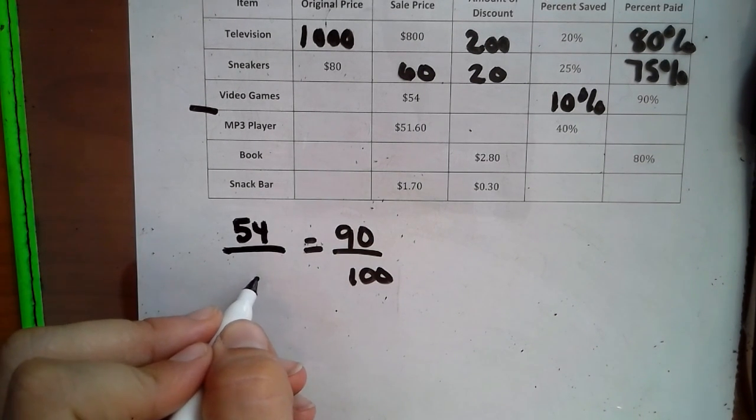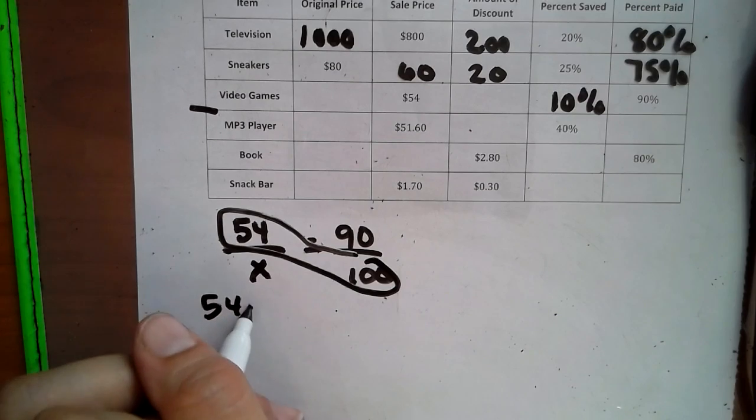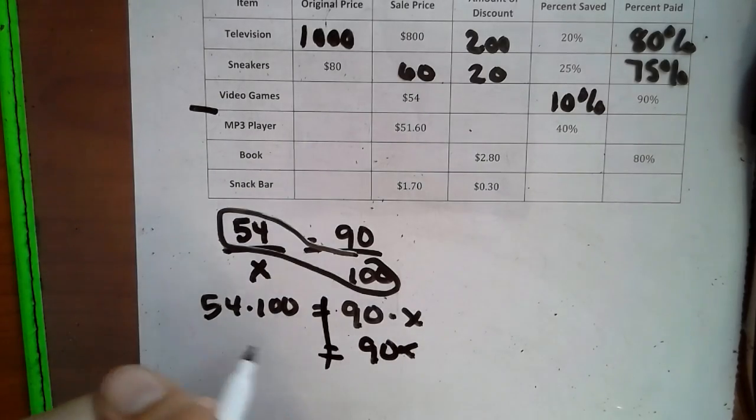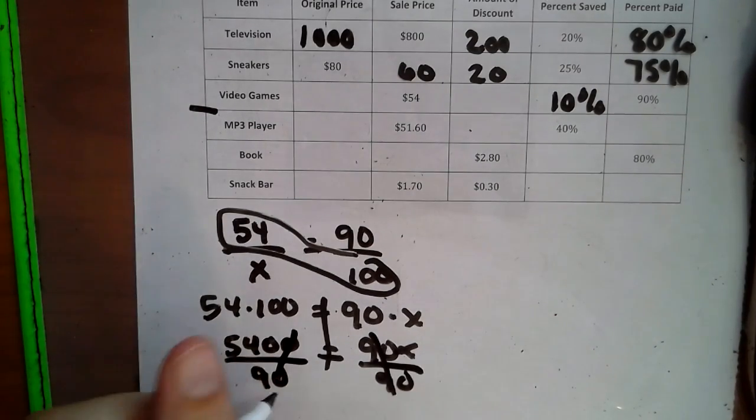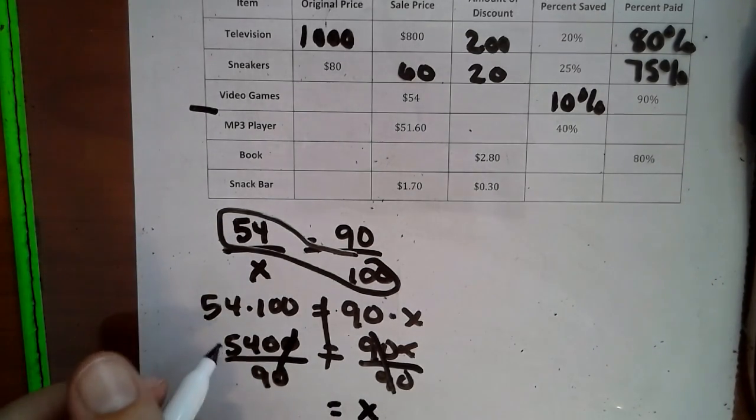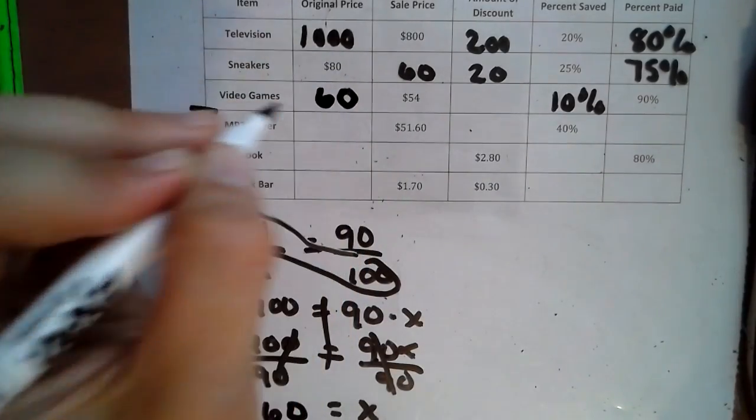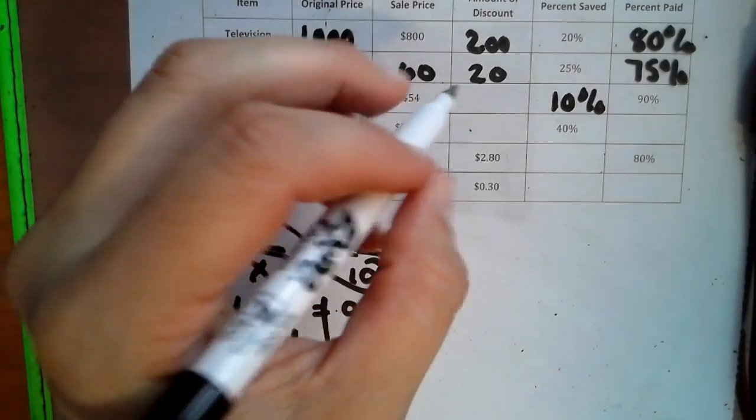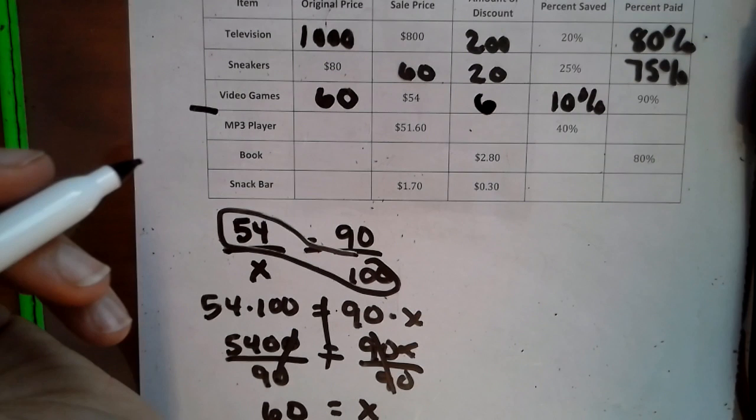So we can find the original price on the bottom. So now we have 54 times 100 equals 90 times X. 90X equals 5,400 divided by 90. So here X equals, it goes in, we get 60. So our original price was $60. So our discount is $6.